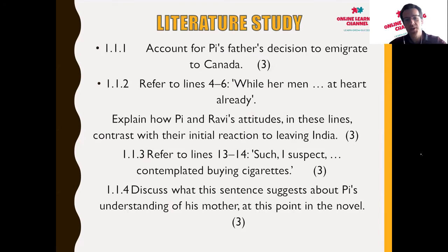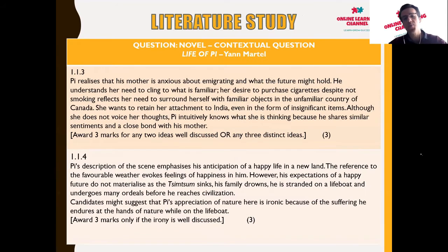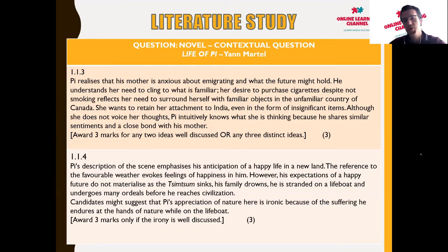Question three refers to lines 13 to 14 — 'such I suspect were the questions that swelled in mother's mind as she contemplated buying cigarettes.' Pi realizes his mother is anxious about immigrating and what the future might hold. He understands her need to cling to what is familiar. Her desire to purchase cigarettes despite not smoking reflects her need to surround herself with familiar objects in the unfamiliar country of Canada. Although she does not voice her thoughts, Pi intuitively knows what she's thinking because he shares similar sentiments and a close bond with her.